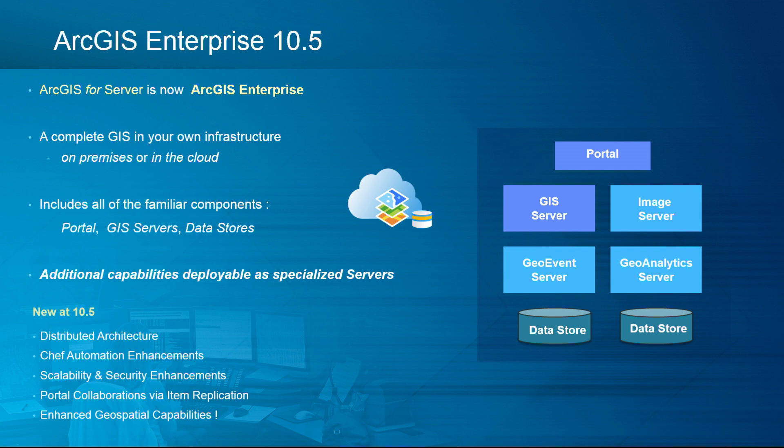ArcGIS Enterprise is a very large part of our work and our release this last year. It is ArcGIS for Server — we've renamed it to ArcGIS Enterprise because that really captures the full dimensions of what it is: a complete GIS in your own infrastructure. It includes the portal, GIS servers, and data stores. New at 10.5, additional capabilities are deployable as specialized servers: the image server, geo-event server, geo-analytic server, and business analyst server. They've become more decoupled and more focused on their purposes, and all of them working with the portal and back-end data stores help you realize your functionality.